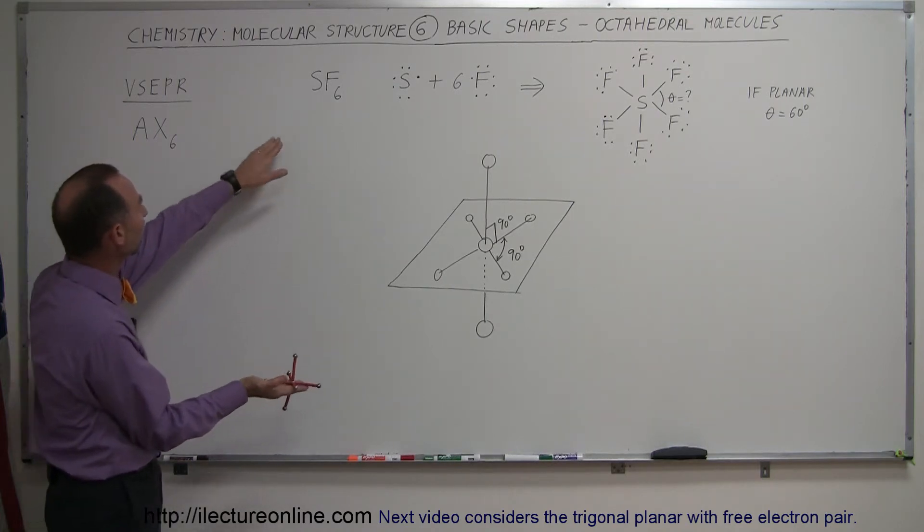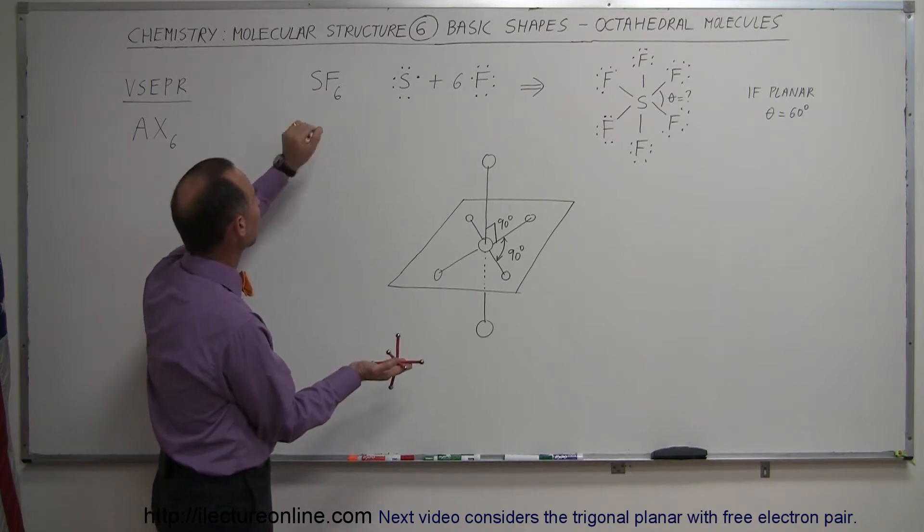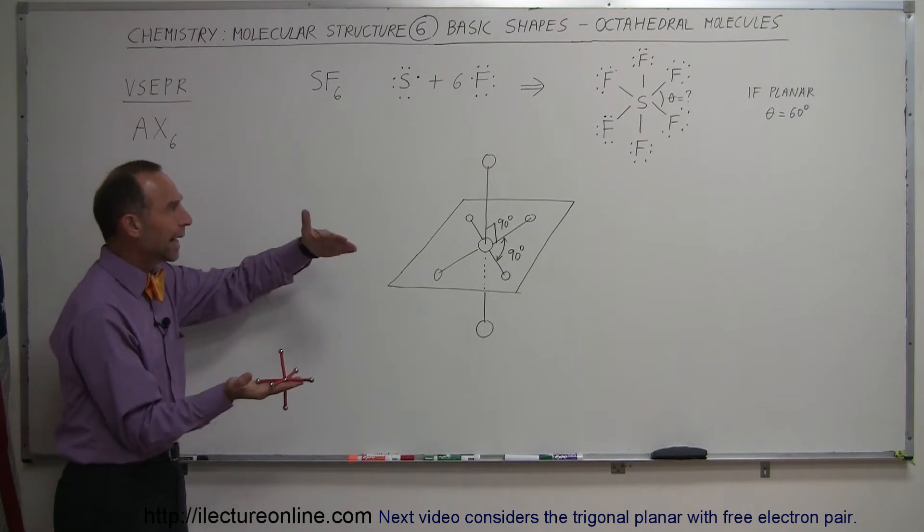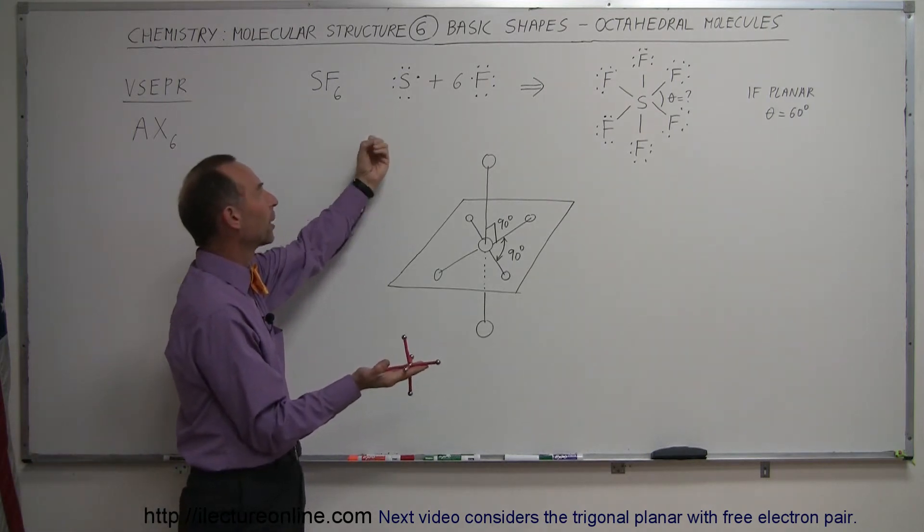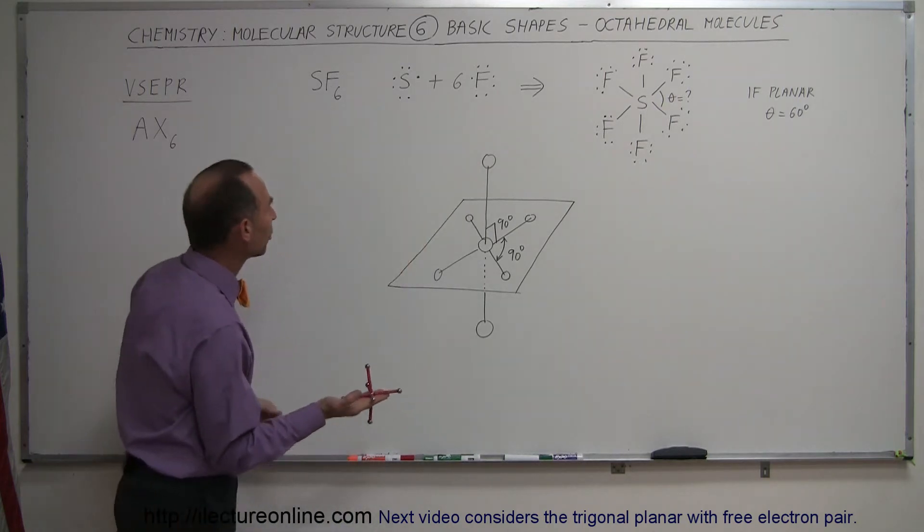In this case, we have an example. We have sulfur hexafluoride, so six fluorine atoms. There is one sulfur atom. Why is the sulfur in the middle and the fluorine at the end? Well, because sulfur is a lower electronegativity, so that would become the central atom. These would become the appendages or the terminal atoms.